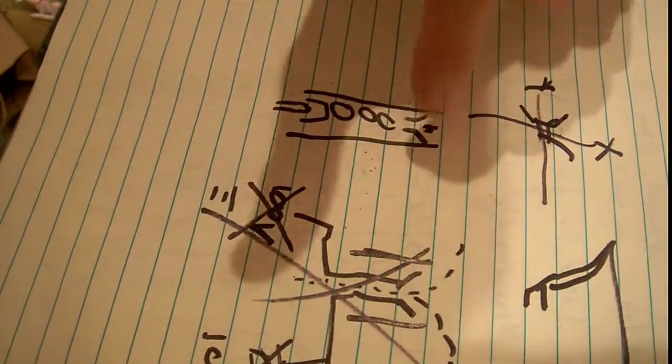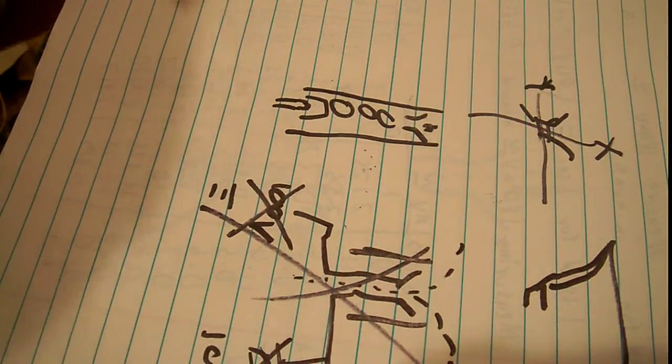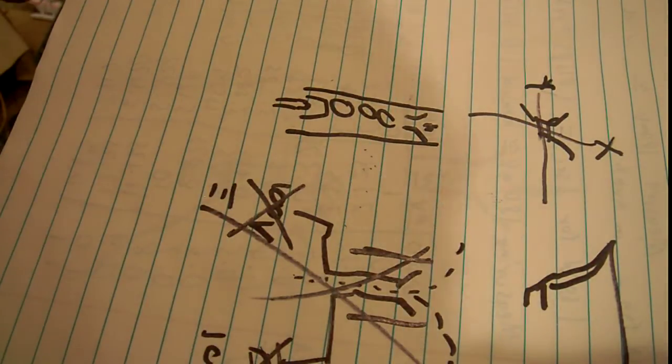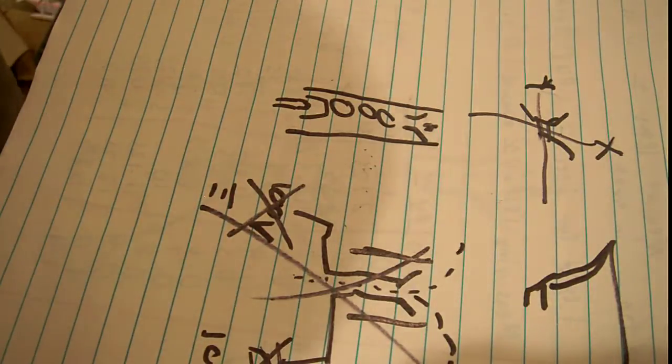But that's how the electrostatic deflection works, is that you have the gun and the plates, and it causes the electrons to curve, because they're attracted to the positive side and repelled by the negative side.